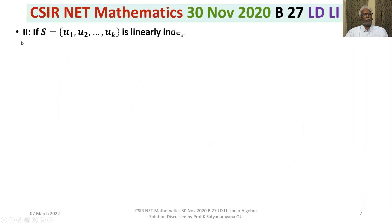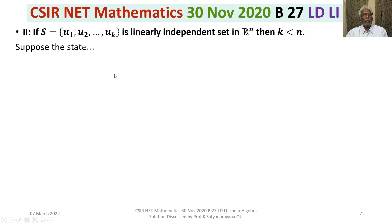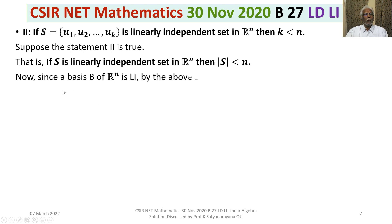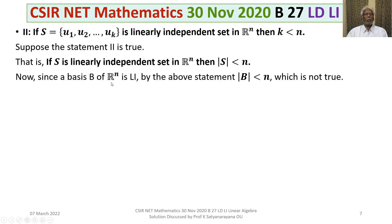Now let us consider Statement 2: if S equal to {U1, U2, ..., Uk} is a linearly independent set in Rn, then k is less than n. Suppose Statement 2 is true — that means the number of elements in S is less than n, i.e., the order of S is less than n. Now take a basis B of Rn. A basis is a maximal linearly independent subset of Rn, so a basis is linearly independent. Then by Statement 2, the order of B must be less than n.